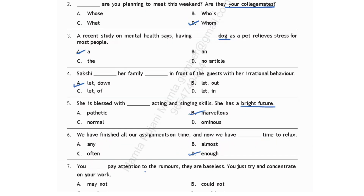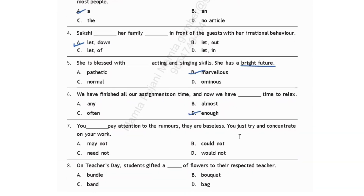You dash pay attention to the rumors. They are all baseless. You just try and concentrate on your work. 'May not' shows possibility and can't be used here. 'Could not' shows inability. 'Need not' means you do not need to pay attention to the rumors. 'Would not' shows unwillingness. So the correct answer is option C: you need not pay attention to the rumors.